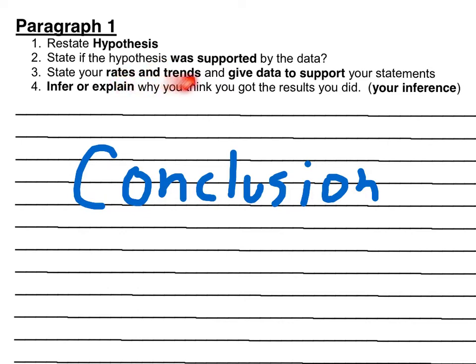And then the rates and trends and give data to support. So here you might have said that, for example, on number two, you might have said the data supports my hypothesis. Now on number three, you're explaining why. What's the rate and trend of your graph that supports your hypothesis? And give three or so data statements, data points to support your answer.